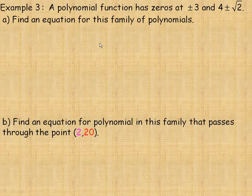A polynomial function has zeros at plus or minus 3 and at 4 plus or minus root 2. So there are actually four roots here altogether — two here and two more here. We're asked to find the equation for this family of polynomials.